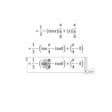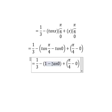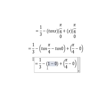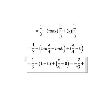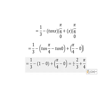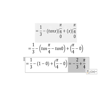Evaluating: this one gives number one, this one gives number zero. We have 1 over 3 minus 2 over 3, which gives us negative 2 over 3, plus π over 4. And this is the final answer.